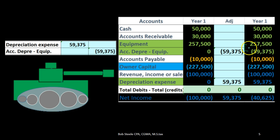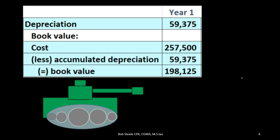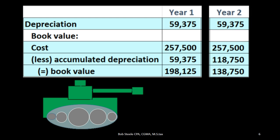Book value is the cost of $257,500 less the accumulated depreciation of $59,375. Note that accumulated depreciation is different from depreciation expense — accumulated depreciation is a contra asset account that continues to accumulate over the useful life.